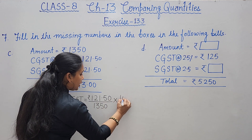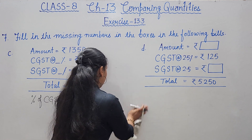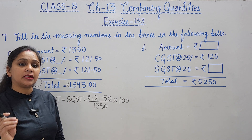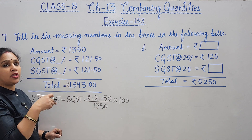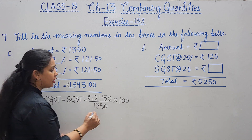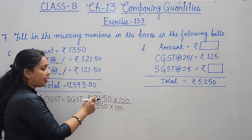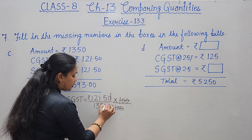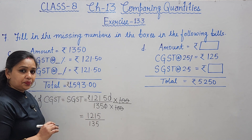Using the formula: percentage = (CGST amount / total amount) × 100 = (121.50 / 1350) × 100. To remove the decimal, multiply numerator and denominator accordingly. This gives us 12150 / 1350, which simplifies. Cancel zeros: 1215 / 135.